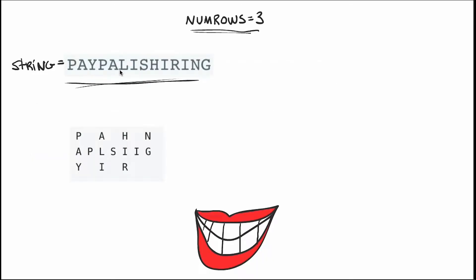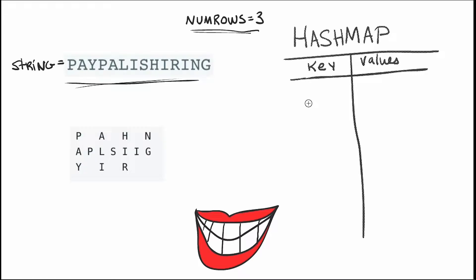We're given this string written in a zigzag pattern with three rows — it goes from one up to three, then decreases back down to one. What we could do is use a hash map where the key is the row number and the value is the letters in that row.